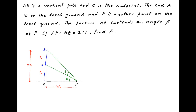Also, we are given that the portion on the ground AP is equal to twice AB, and therefore AP is equal to 4H. Now, in right-angled triangle APC, tan of alpha is equal to the perpendicular AC which is equal to H, divided by the base AP which is equal to 4H. Therefore, tan alpha is equal to 1 upon 4.